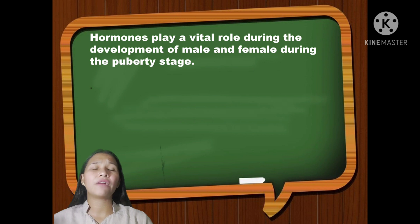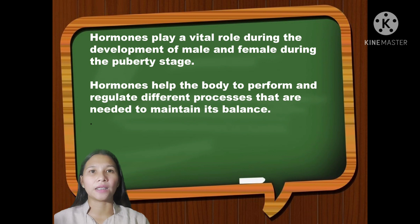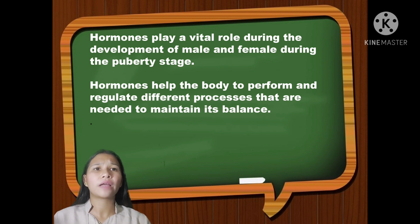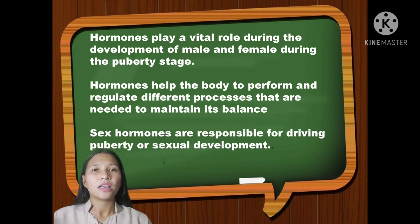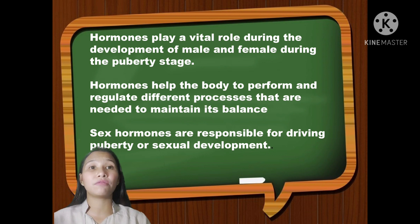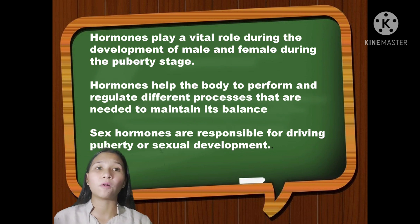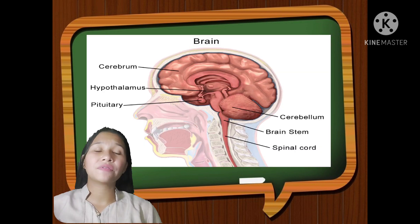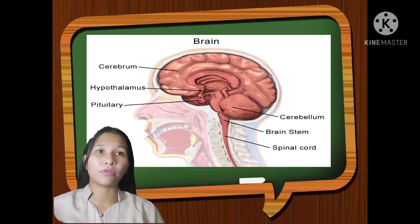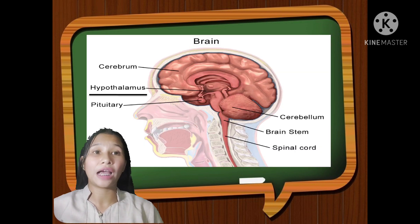Hormones play a vital role during the development of male and female during the puberty stage. Hormones help the body to perform and regulate different processes that are needed to maintain balance. Sex hormones are responsible for driving puberty or sexual development. Puberty and reproductive systems are controlled by the hormones of the hypothalamus.